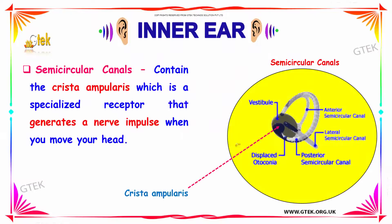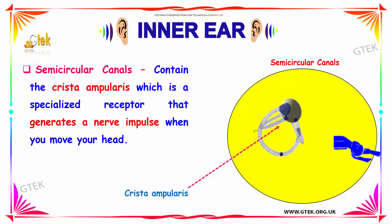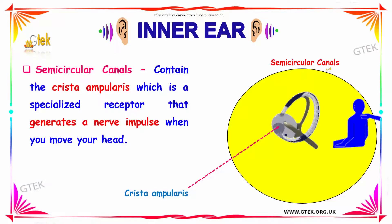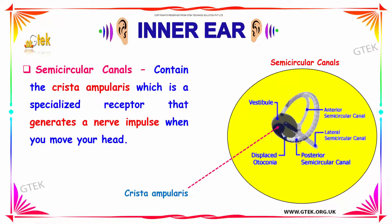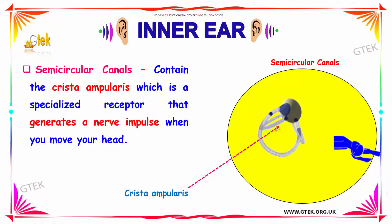The next part in your inner ear is the semicircular canals. Your semicircular canals contain the crista ampullaris, which is a specialized receptor that generates a nerve impulse when you move your head. On moving your head, the semicircular canals generate the nerve impulse to the receptor crista ampullaris, as you can see here.